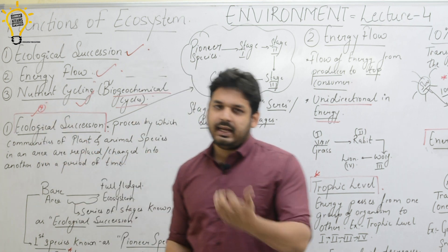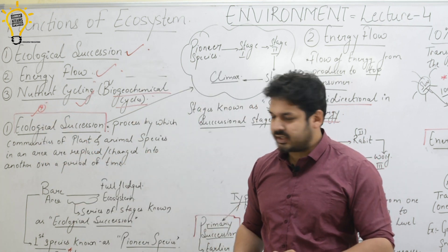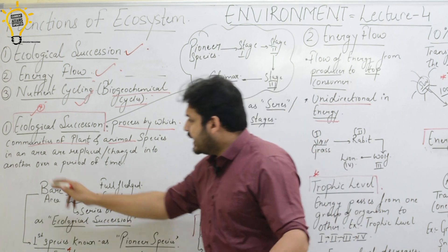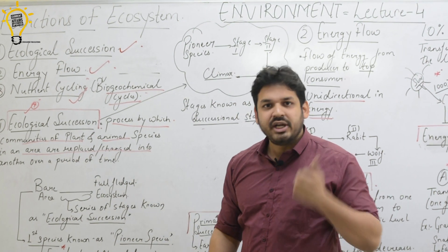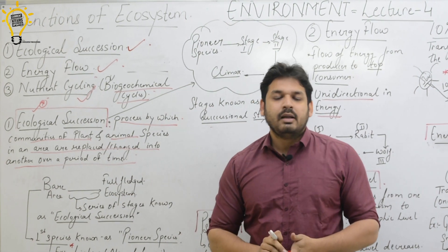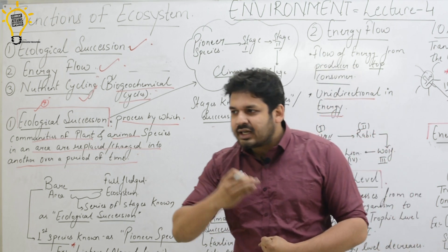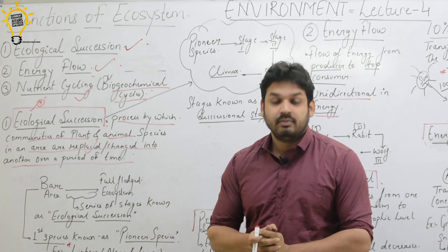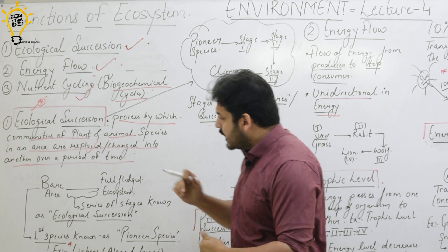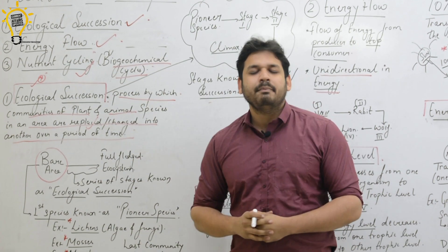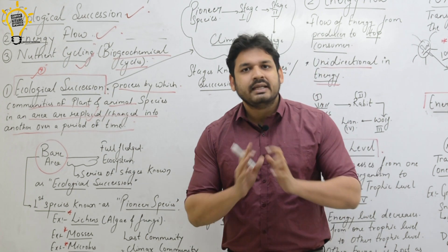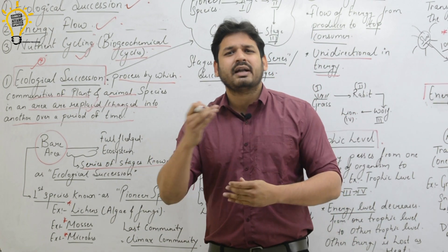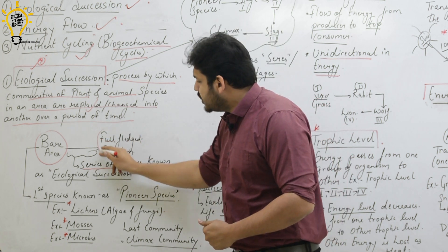First we have to deal with ecological succession — the process by which communities of plant and animal species in an area are replaced and changed into another over a period of time. Let us suppose we have a bare area where life does not exist. From that bare area, there are many stages of development, and we move forward to where the ecosystem is fully developed.